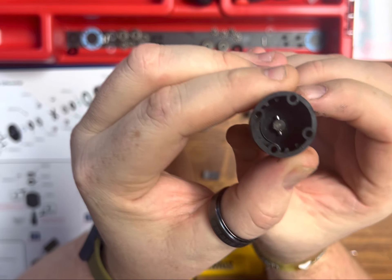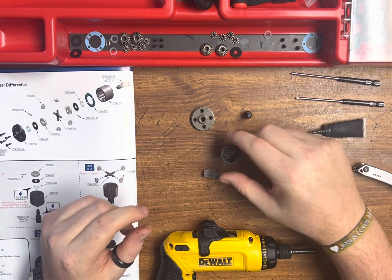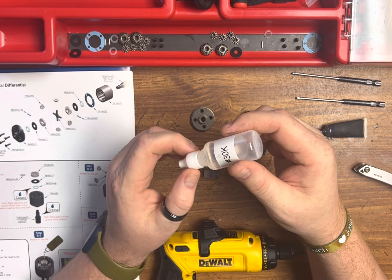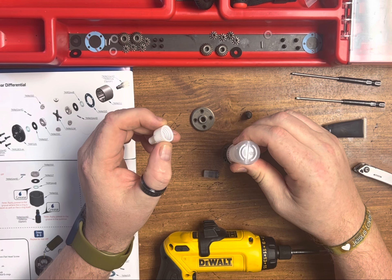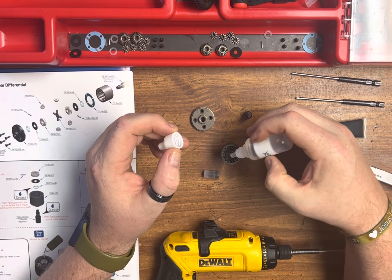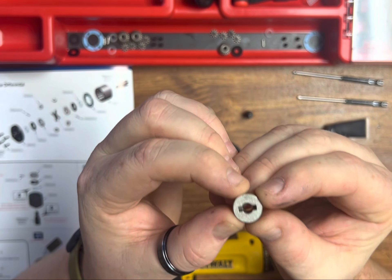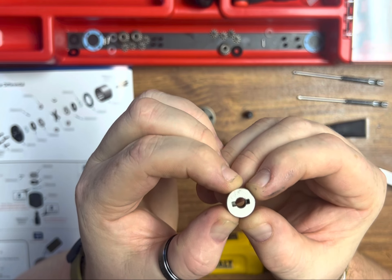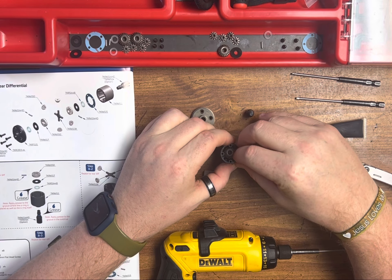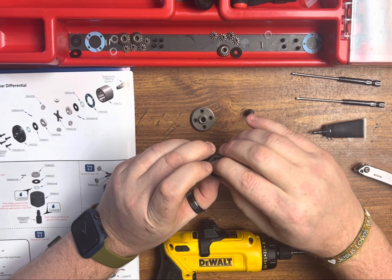Ready for just a little bit of diff fluid and we can start putting our gears in. So up front we're going to be using 30,000 weight. I'm going to go ahead and put a little bit in. Take one of our bigger gears, this slot here goes over the pin that we just installed with our needle nose pliers. Like so.